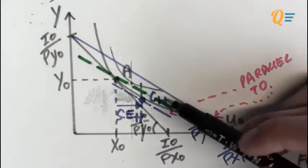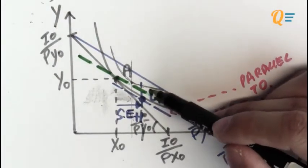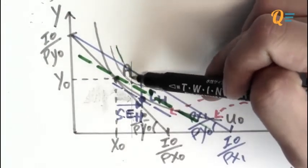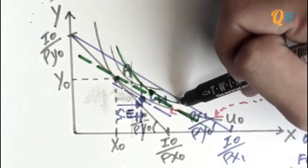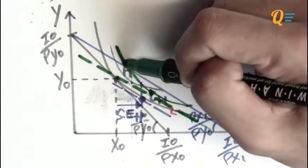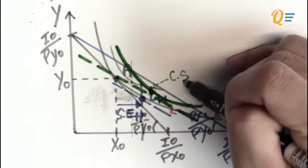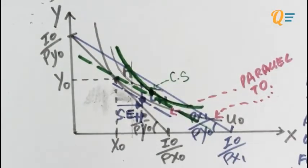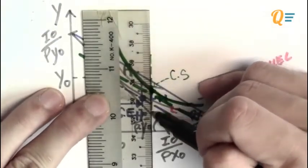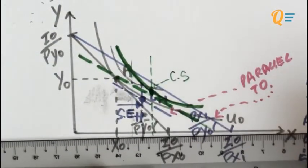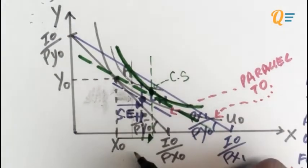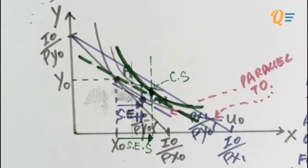I want point CS to be over here — point C for Slutsky. So I'm going to draw an indifference curve which is tangent to the imaginary budget line at that point. This is point CS for Slutsky. After drawing a vertical line downwards to define my substitution effect under the Slutsky definition of real income, it's obvious that this SE is bigger than SEH.